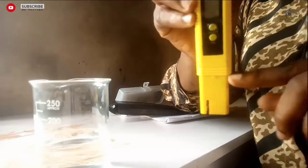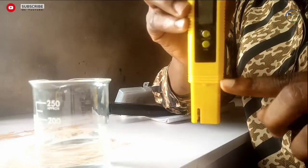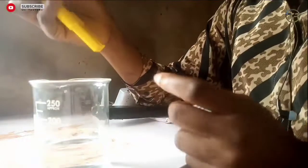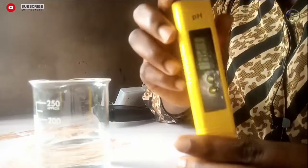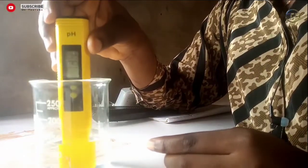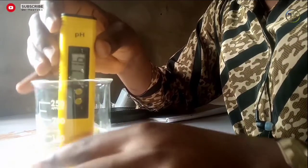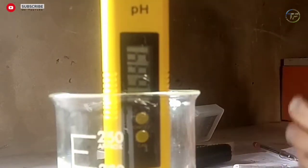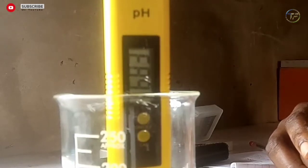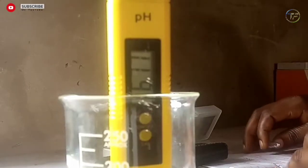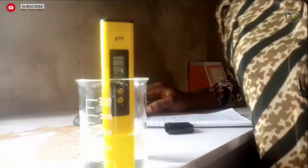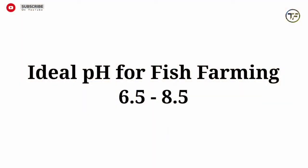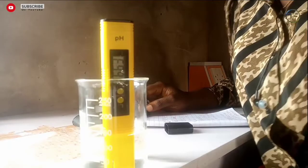You open it like so. There is a mark here — this is the point at which you should immerse your pH meter; it shouldn't go above this point, else you're going to damage it. So let's check the pH of this water. You turn it on, then immerse it in your water and it starts reading. The ideal pH for fish farming should be 6.5 to 8.5. If you get something lesser than 6.5, your water is acidic and you can't use it.